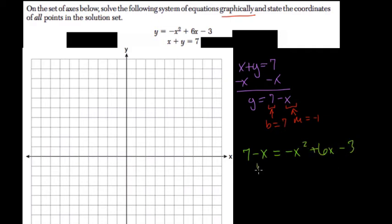And here we're going to add x on the right side and subtract 7 from both sides. So then 0 equals negative x squared plus 7x minus 10. So here we have minus 10. Factors of negative 10 that add to 7. What could they be?